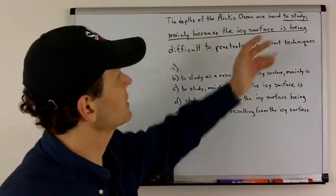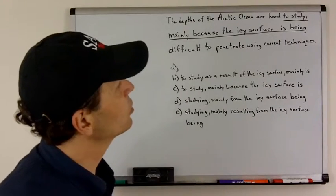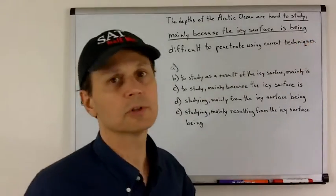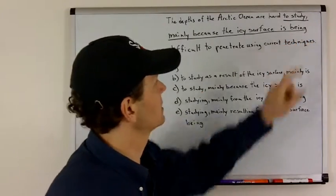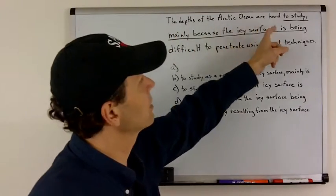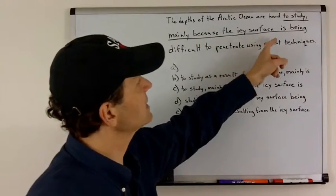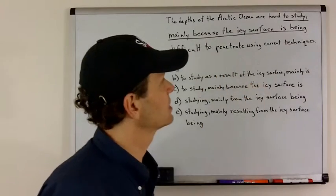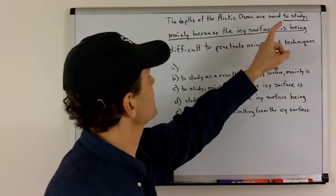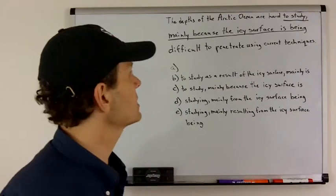So, with that in mind, let's just take a look at this. When we look at choice A, the word that I think is unnecessary and adds confusion rather than clarity is the word being. Just think about this for a second. If you read this, it says, the depths of the Arctic Ocean are hard to study. So far, so good. Mainly because the icy surface is being difficult to penetrate using current techniques. What if we got rid of being? Mainly because the icy surface is difficult to penetrate using current techniques. It's more direct and it's easier to understand.